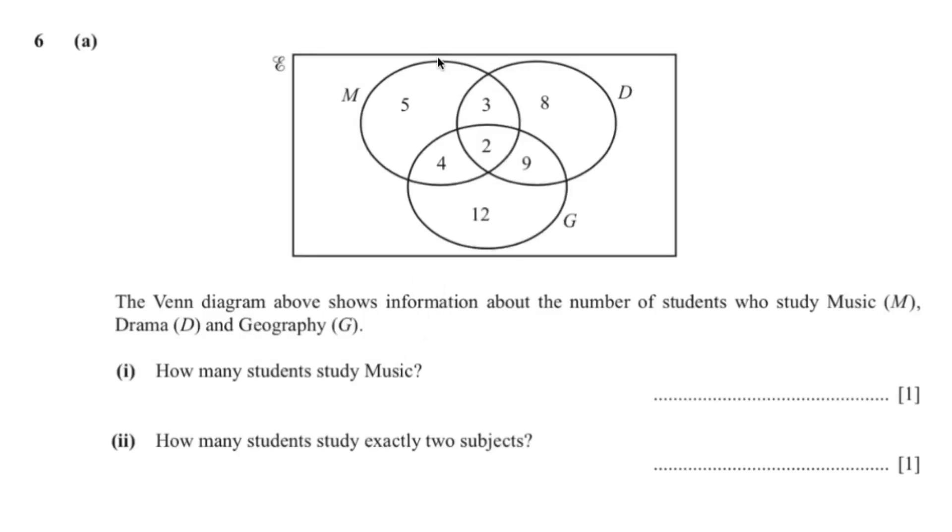So our first question is asking us how many students study music. All of these students study music. So 5 plus 4 plus 3 plus 2 would give us 14.